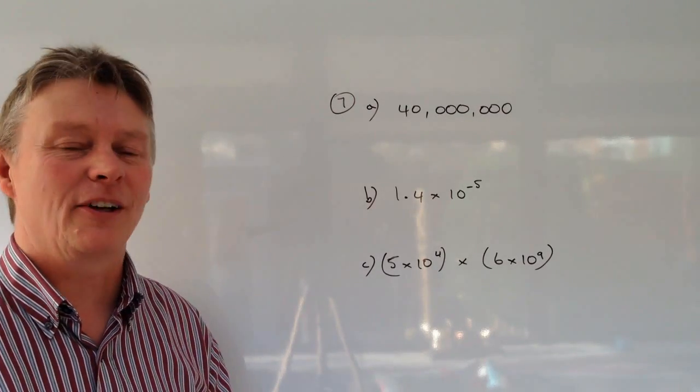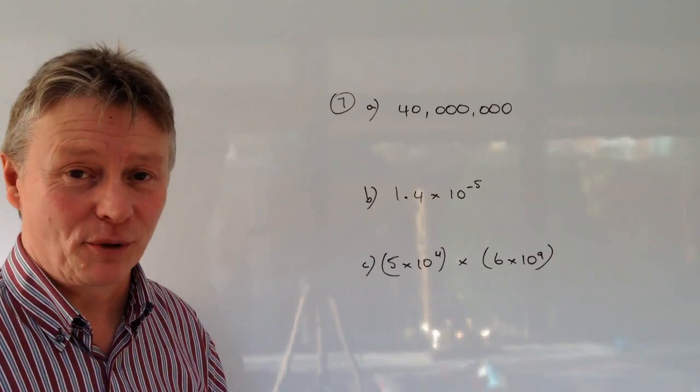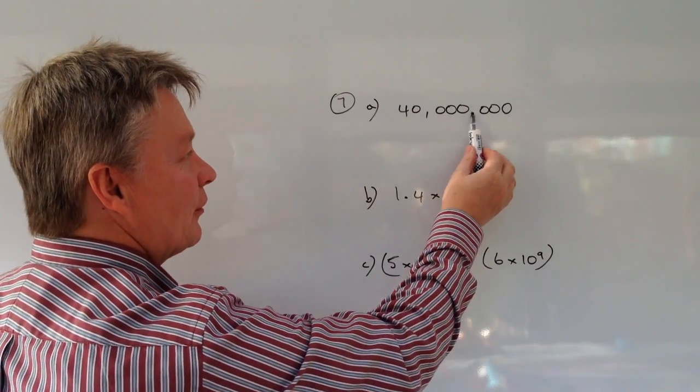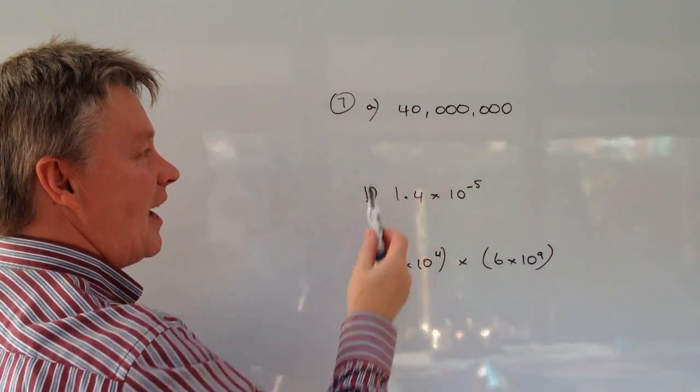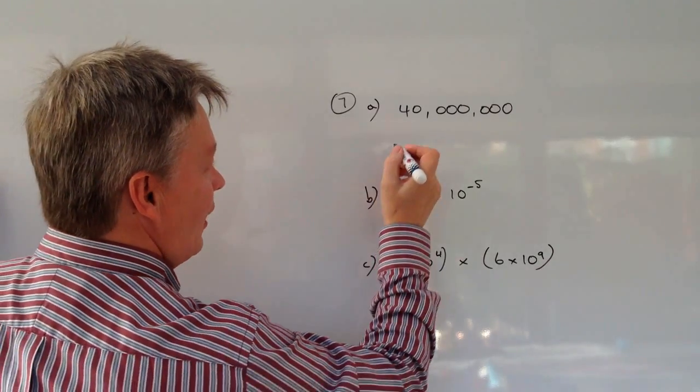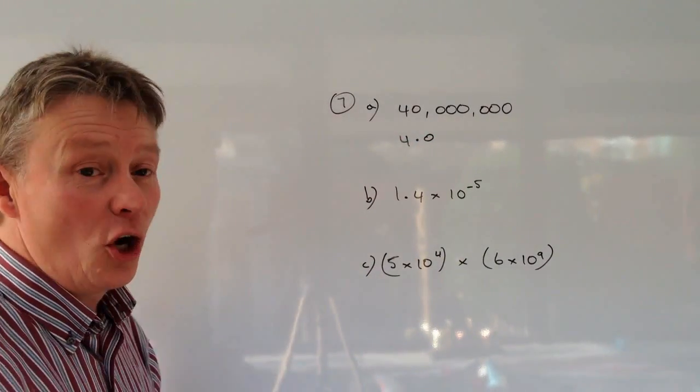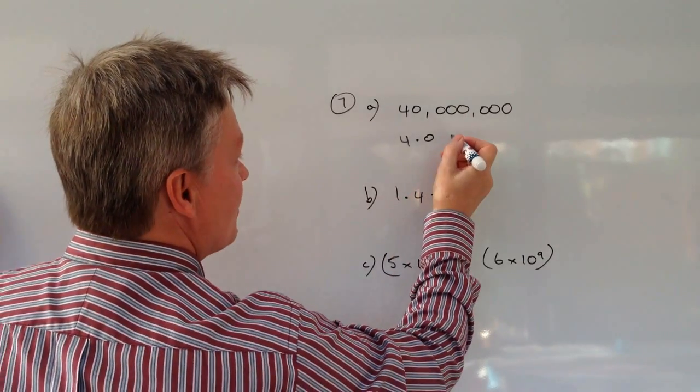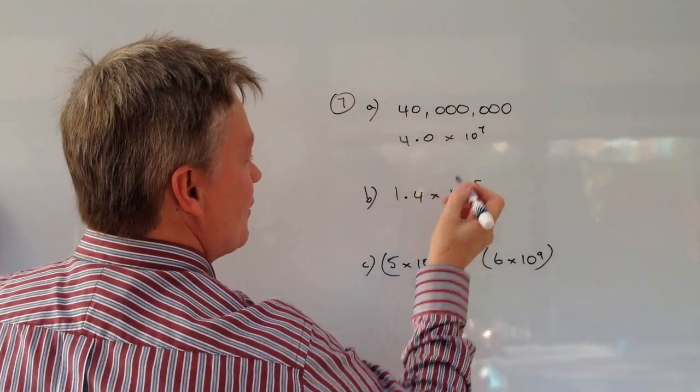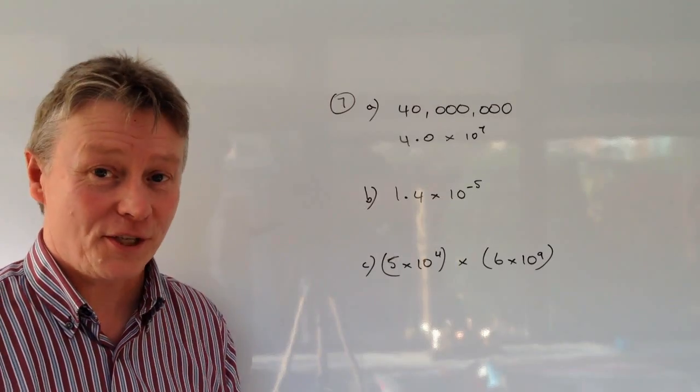Well basically standard form is all about how far has the decimal point moved and it's moved 3, 6, 7 places to create a number which is 4.0 if you prefer or just 4 and that's times 10 to the power of 7. So it's moved 7 decimal places.